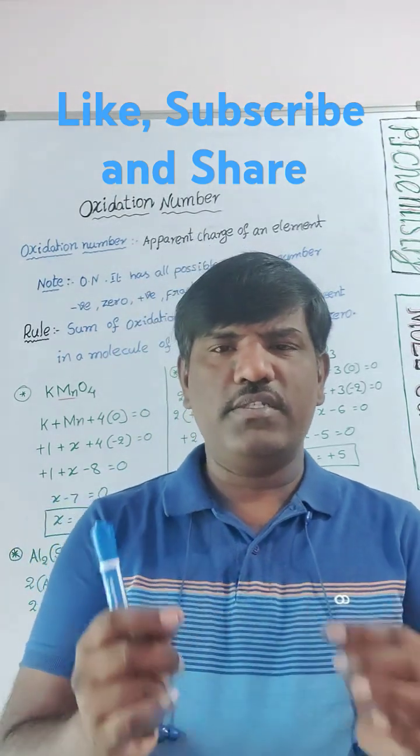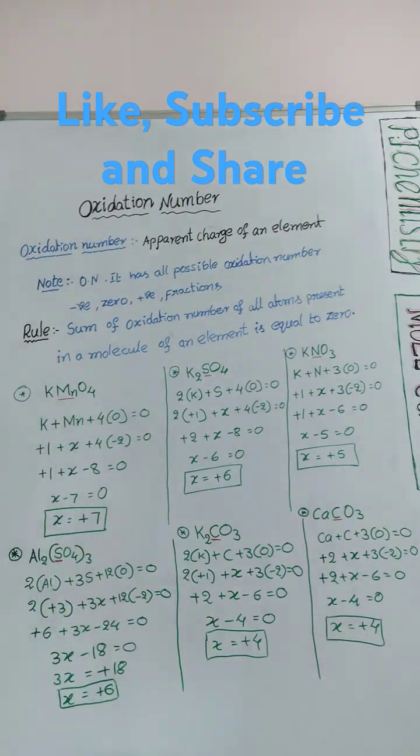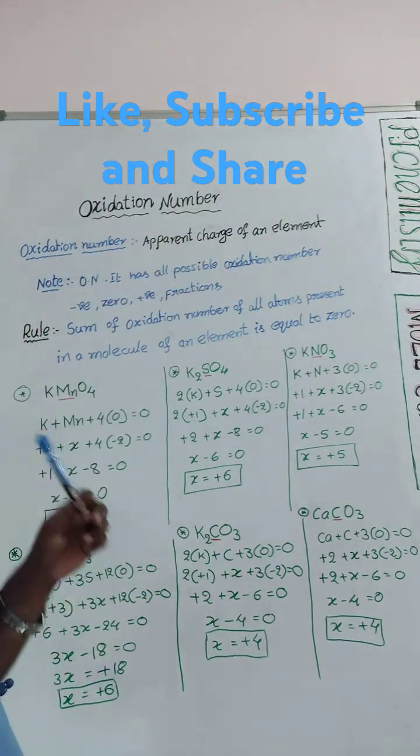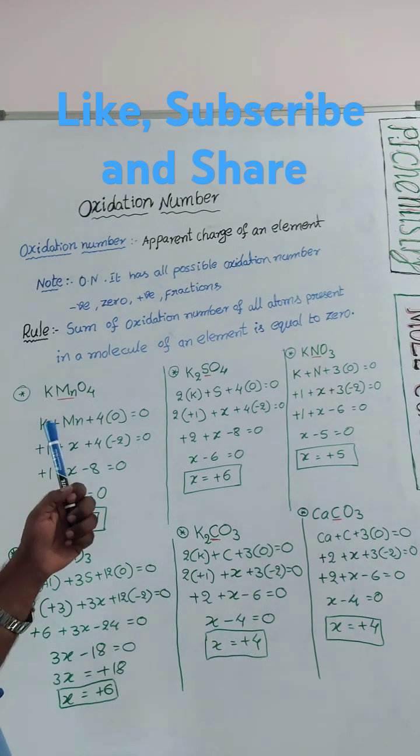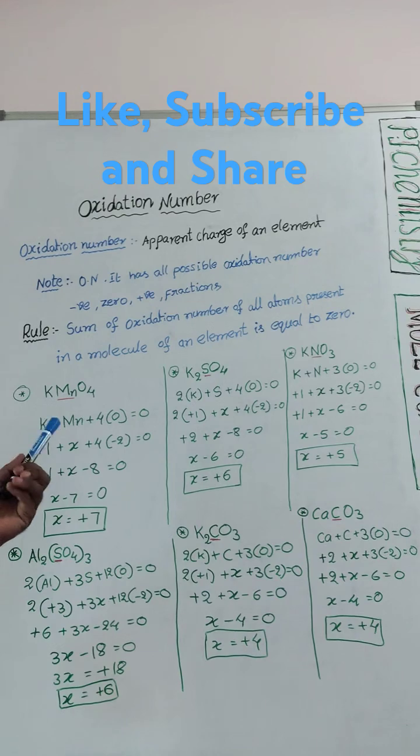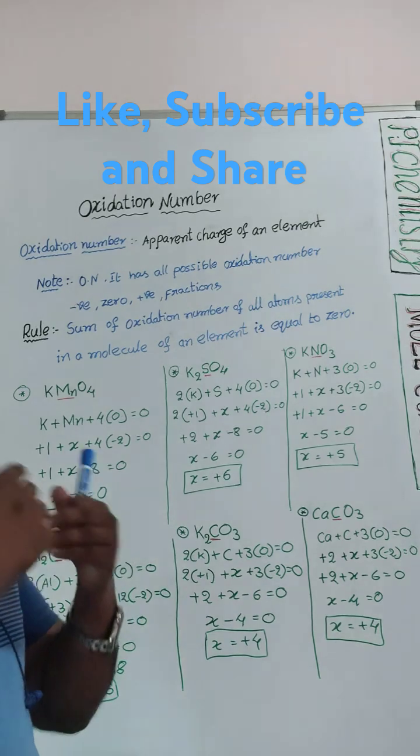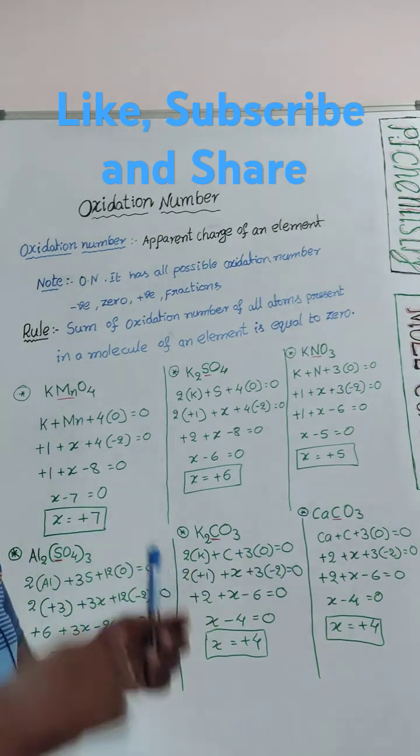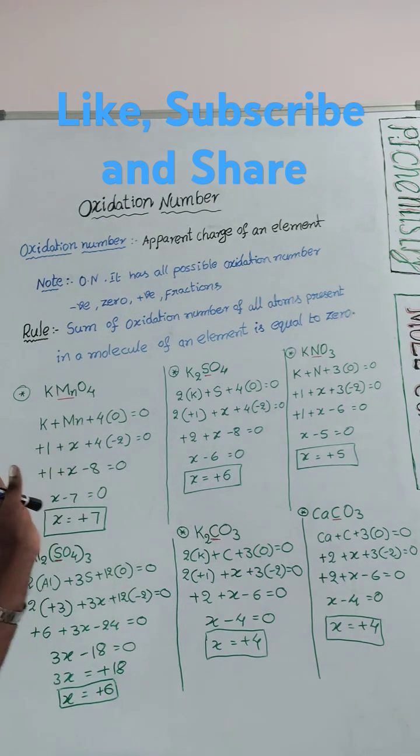Oxidation number means apparent charge of an atom. Apparent charge of an element is called oxidation number. Apparent charge means clear charge. Oxidation number can have all possible numbers: negative values, positive values, zero, and even fractions.